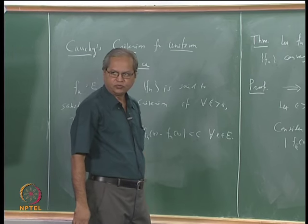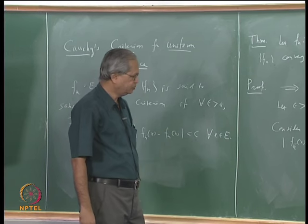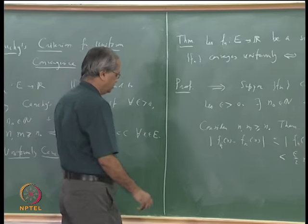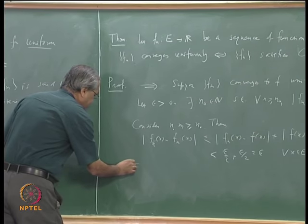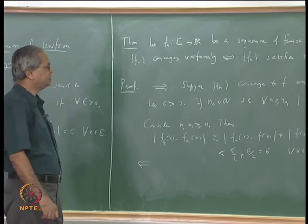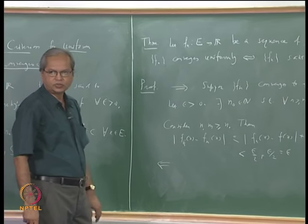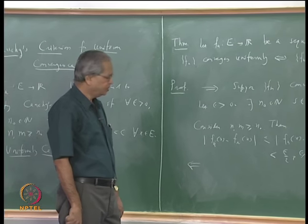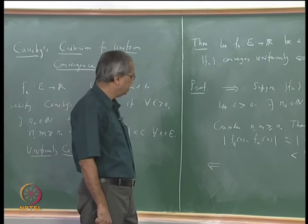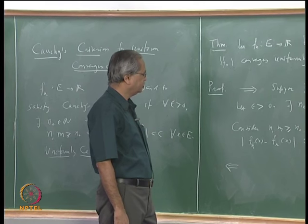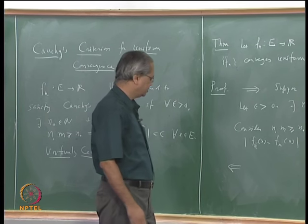This shows that f_n satisfies Cauchy's criteria: for every epsilon there exists N_0 such that whenever n and m are greater than or equal to N_0, |f_n(x) - f_m(x)| is less than epsilon for every x in E. Now for the other direction: we assume f_n satisfies Cauchy's criterion and need to show it is a uniformly convergent sequence.